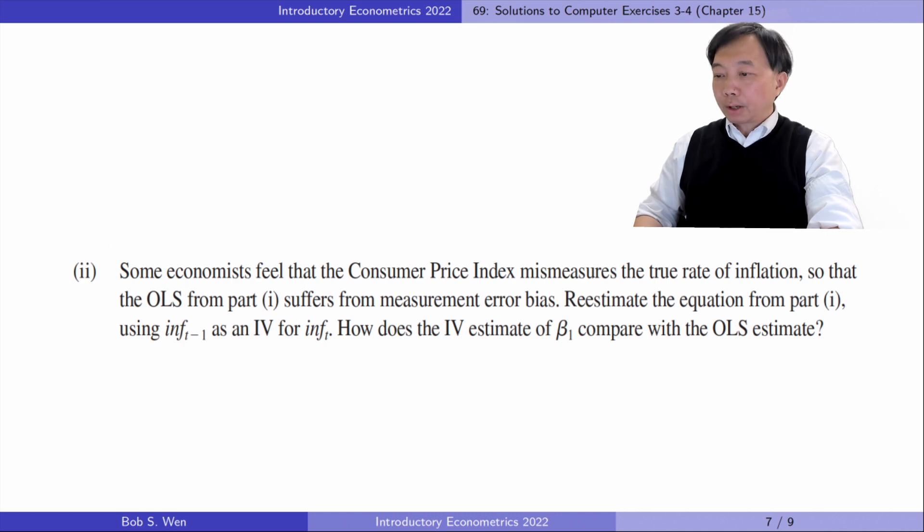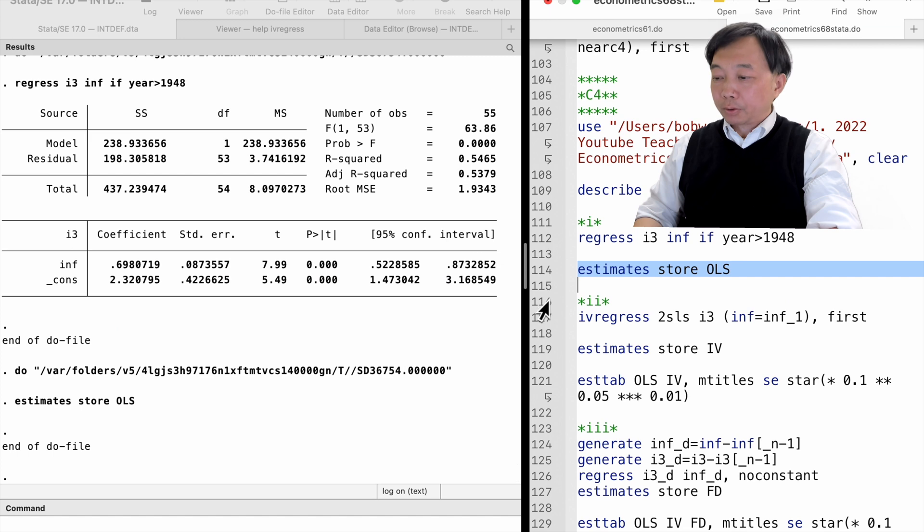In part two, some economists feel that the Consumer Price Index mismeasures the true rate of inflation so that the OLS from part one suffers from measurement error bias. We estimate the equation from part one using inflation rate in t minus one as an IV for inflation rate in t. How does the IV estimate of beta 1 compare with the OLS estimate? We compare the estimates in a table.